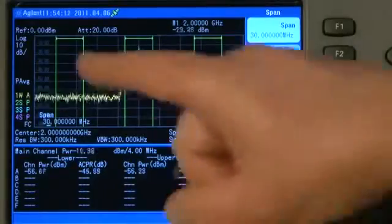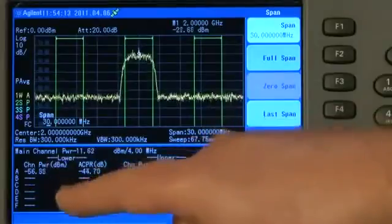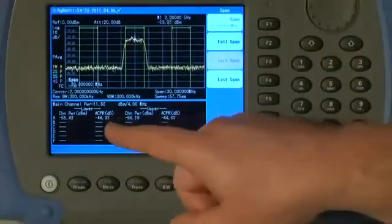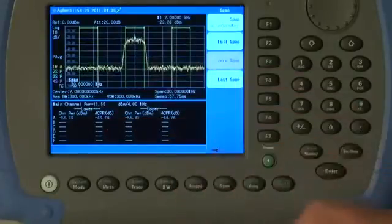And we do not have to just do it with two adjacent channels. As you can see here, we can have up to six adjacent channels on either side of the main channel. And in real time, the analyzer will tell us the absolute values and the relative values relative to the main channel power.